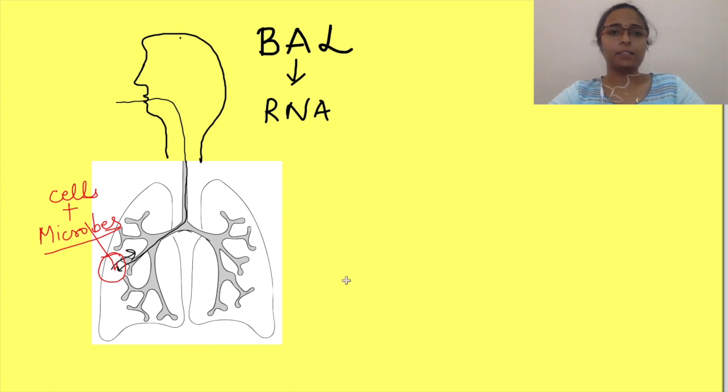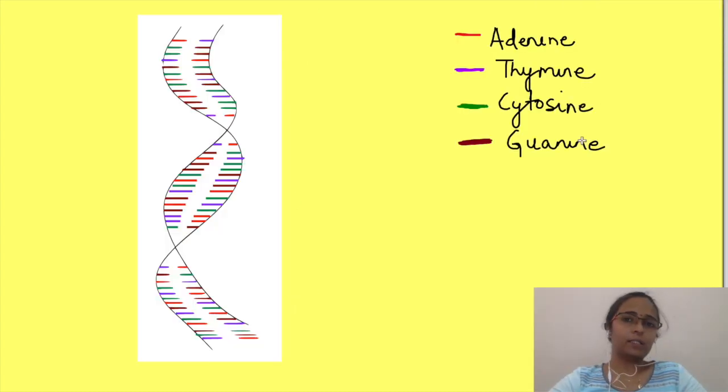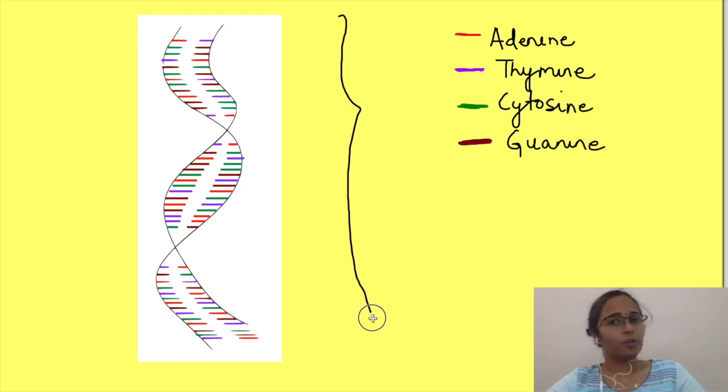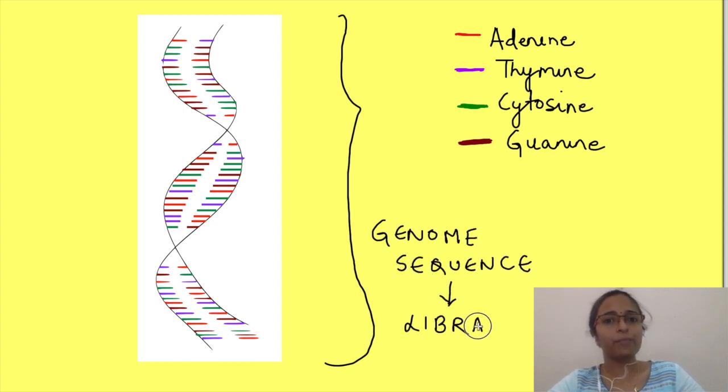We will digress a little bit here. Our genetic material, i.e., DNA or RNA, is made up of nucleotides and the sequence in which these nucleotides are arranged differs in different species. The sequence in which the nucleotides are arranged is known as genome sequence. The genome sequence of various organisms are stored in libraries.